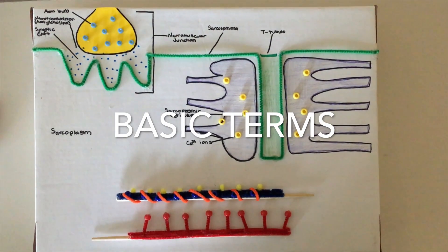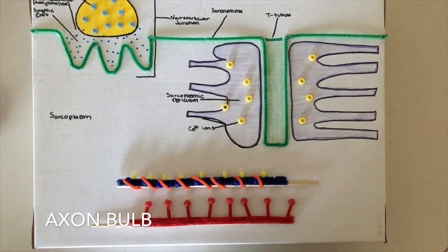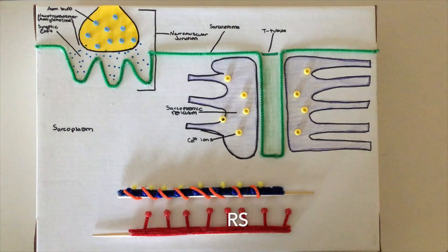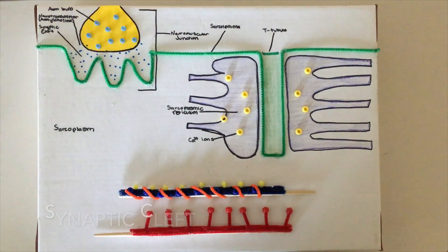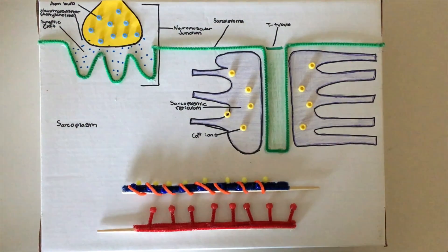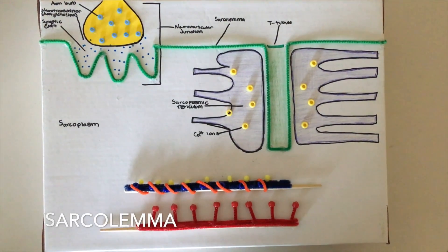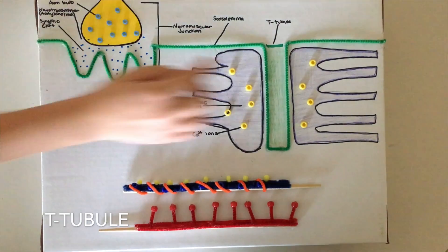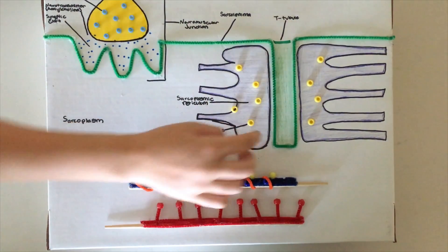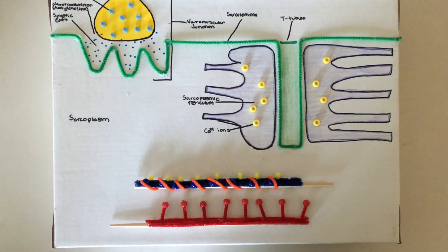Before we start this video, we're going to go over a few basic terms, starting with the axon bulb, and then the vesicles, neurotransmitters, the synaptic cleft, and that all makes up the neuromuscular junction, which leads to the sarcolemma, to the T-tubule, and then the sarcoplasmic reticulum, the calcium ions, and the sarcoplasm.